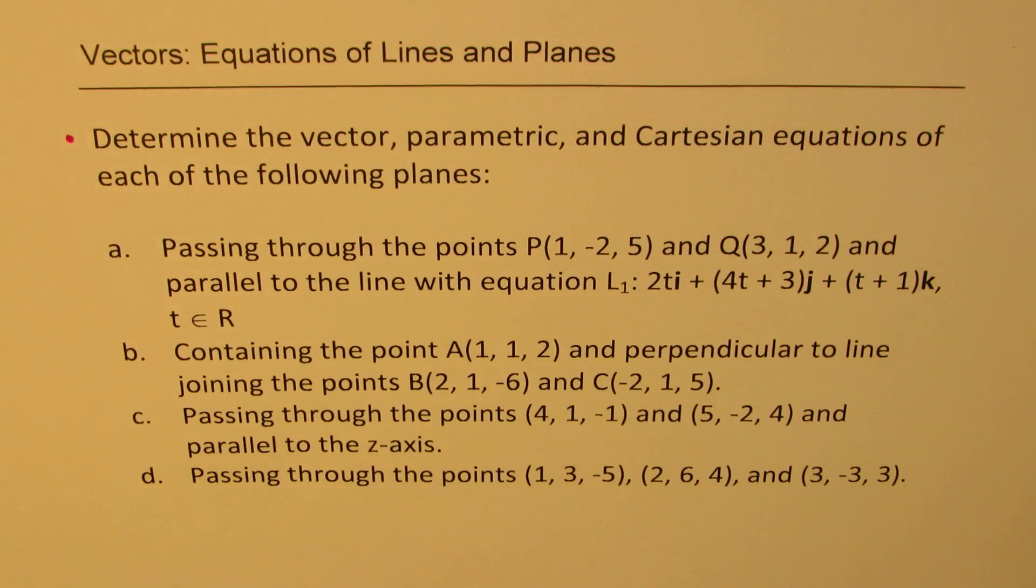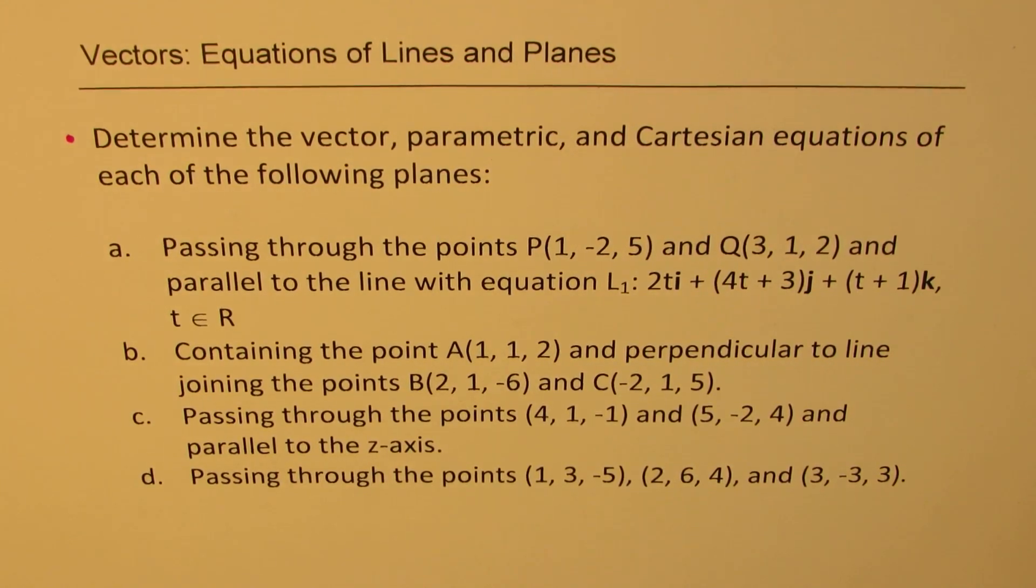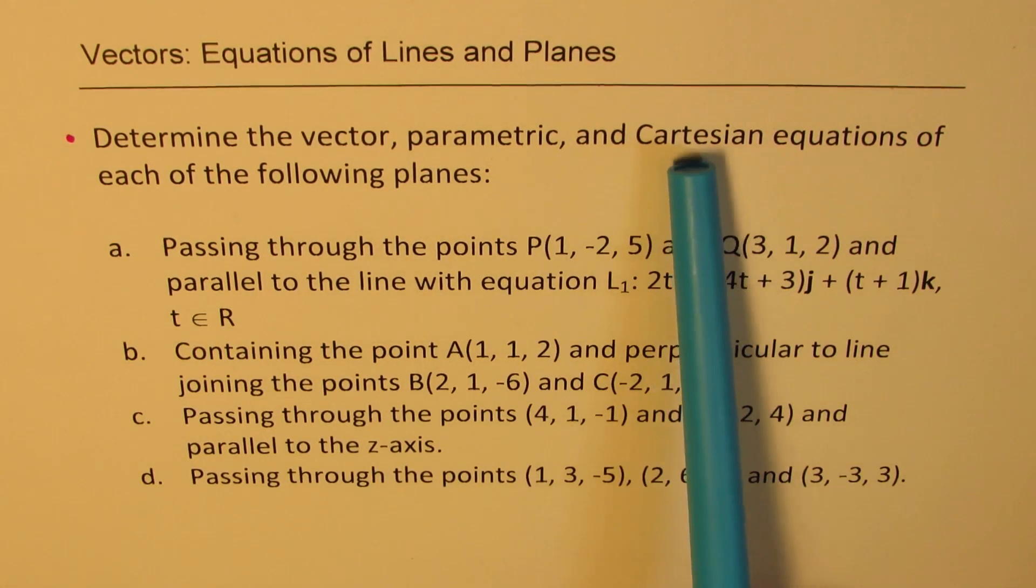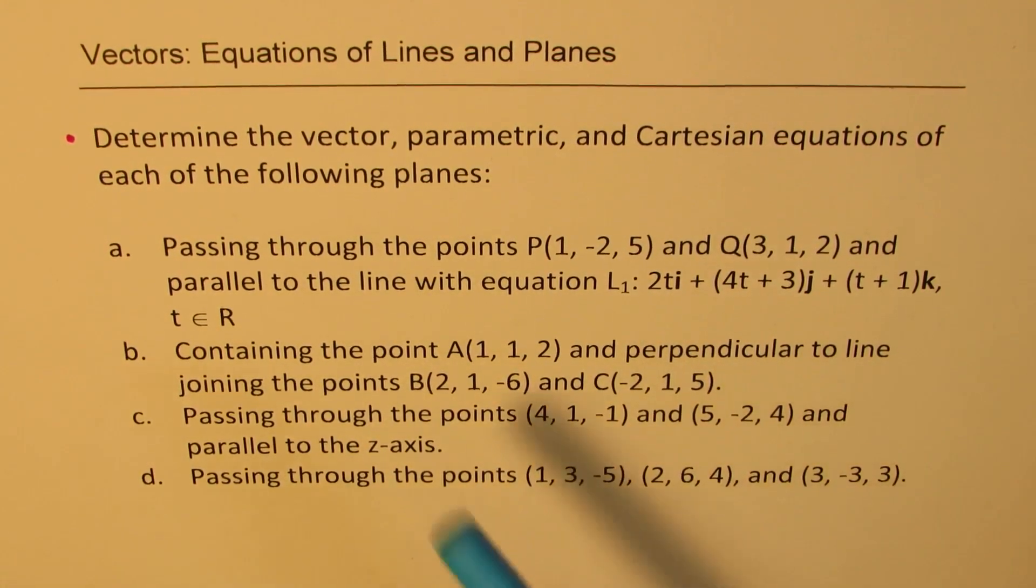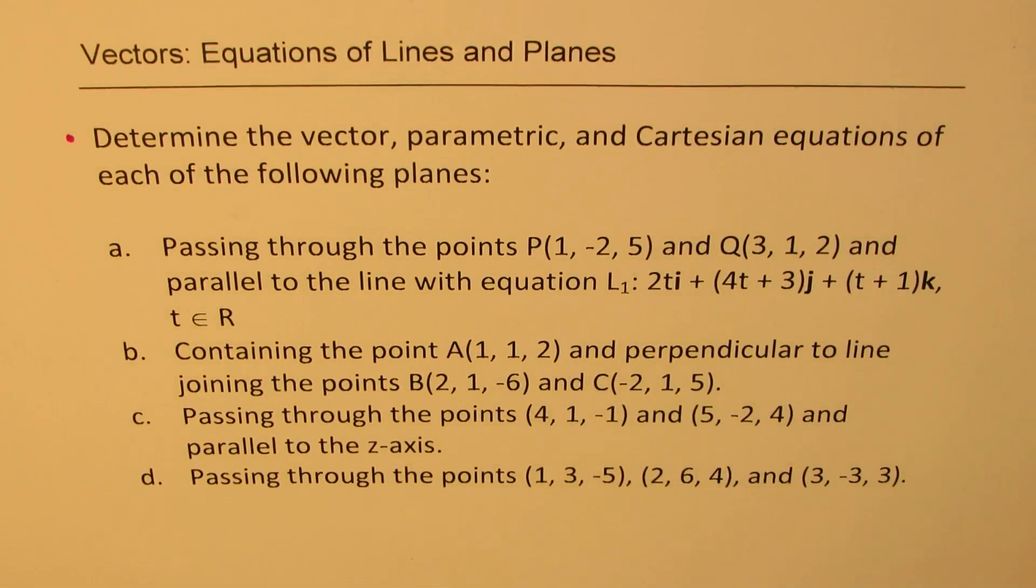Here is the third question which says, determine the vector, parametric and Cartesian equations of each of the following planes. And here we have four parts. The conditions given will cover the whole chapter a couple of times. So while answering this question, for these four parts, I'll try to write Cartesian equation for all of them. But for vector and parametric, I'll just do for a couple of them. So let's begin with the solutions.